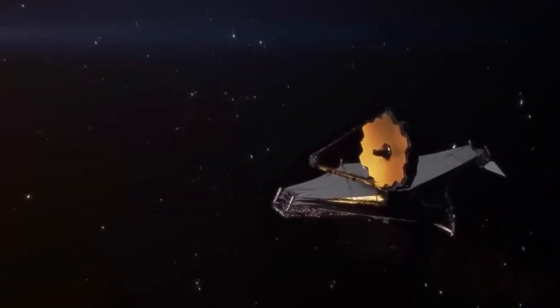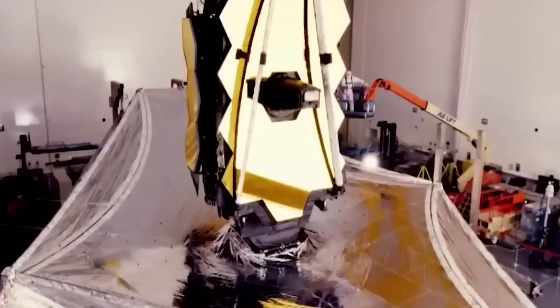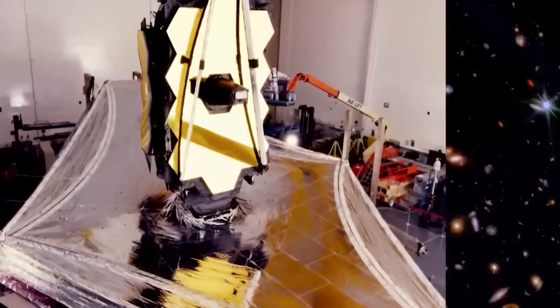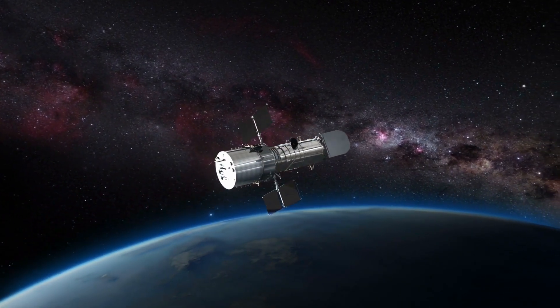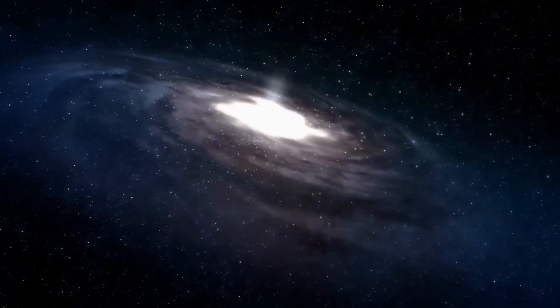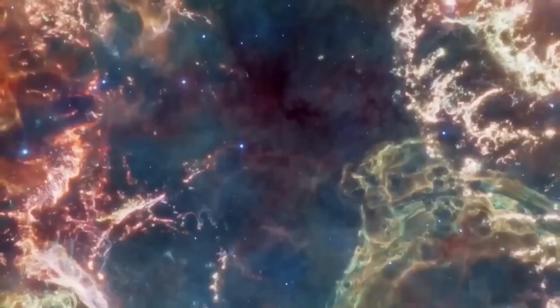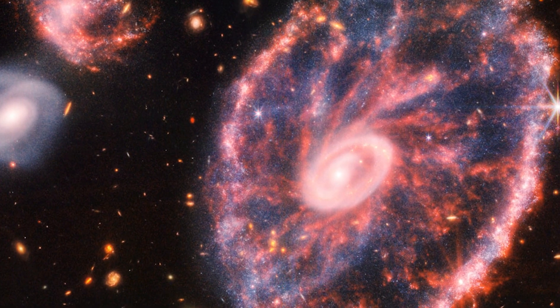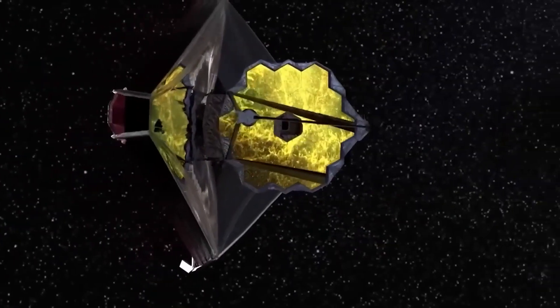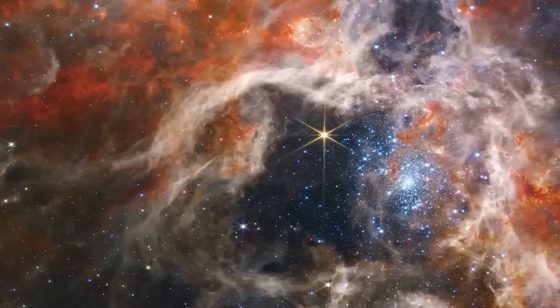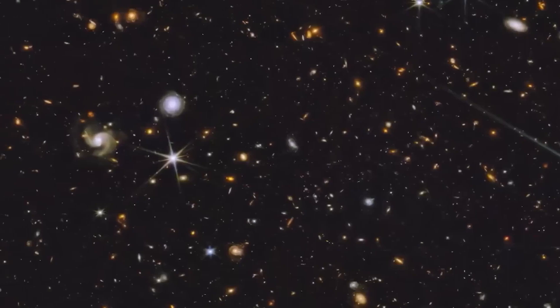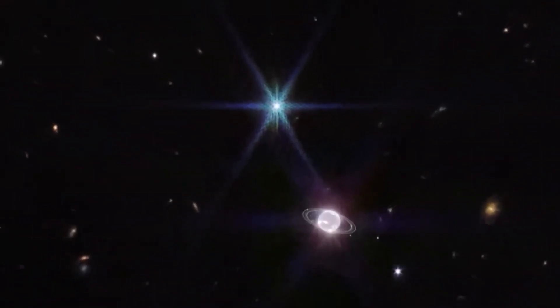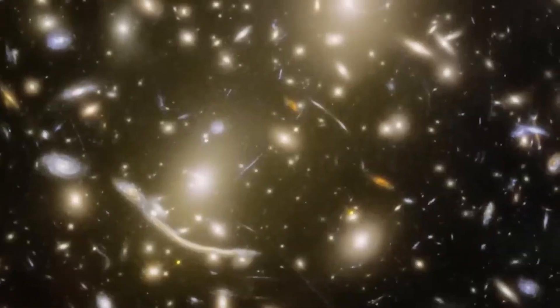The James Webb Space Telescope is a member of the most recent generation of space telescopes, surpassing its predecessor, the Hubble Space Telescope. Because it can focus on the infrared region of the electromagnetic spectrum, the JWST has a special advantage in studying celestial objects that emit longer wavelengths. In contrast to cosmic dust clouds which frequently block visible light, infrared can look through these cosmic veils.